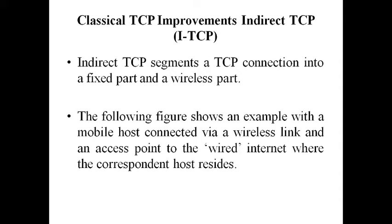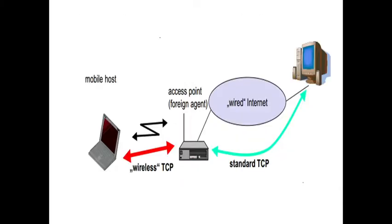The first improvement is called ITCP — Indirect TCP. This is the first method introduced in the mid-1990s after several research projects. The following figure shows an example with a mobile host connected via a wireless link and an access point to the wide internet where the correspondent host resides. Here, if you observe the diagram, there is a mobile host connected via a wireless link, and an access point is situated in the middle.